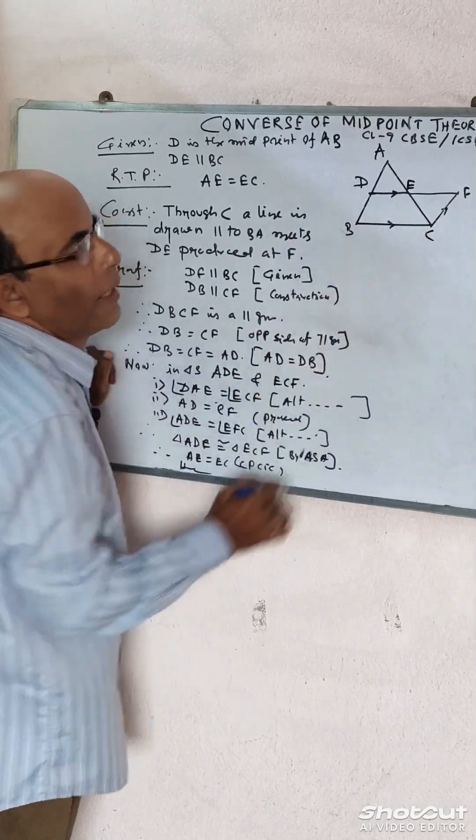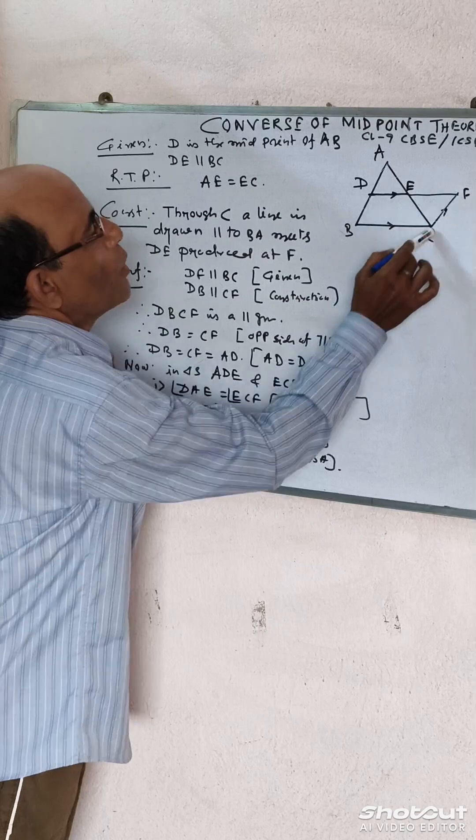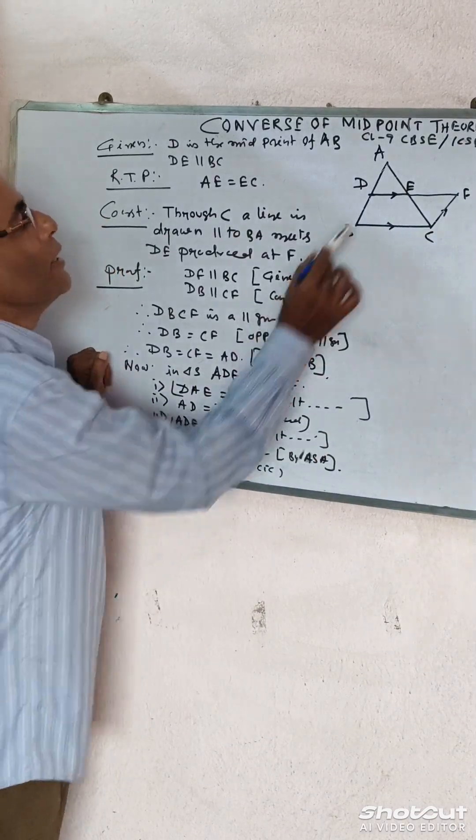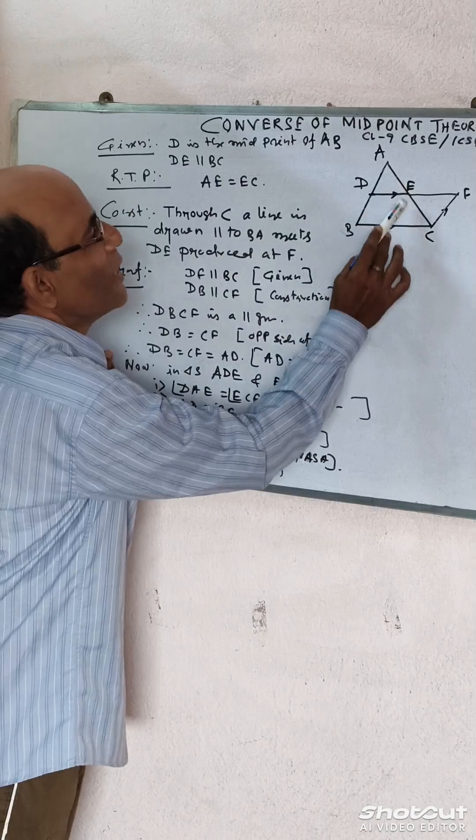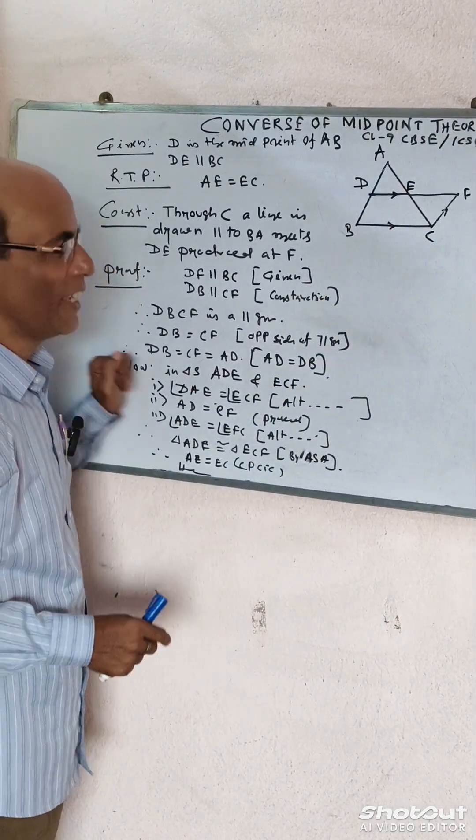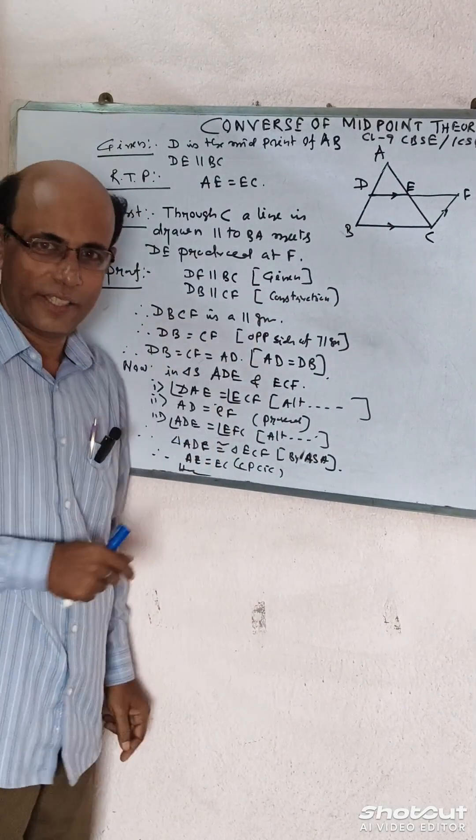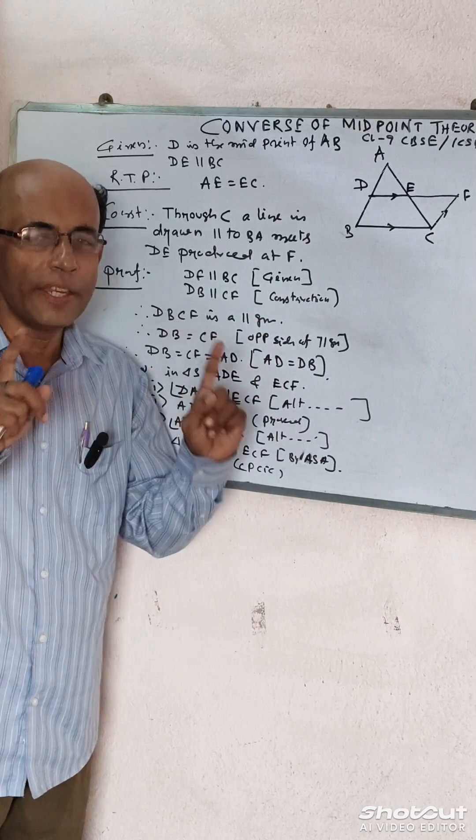AD equals CF. By ASA, these two triangles are congruent. Therefore AE equals EC, that means E is the midpoint of AC. In this way you can prove any theorem.